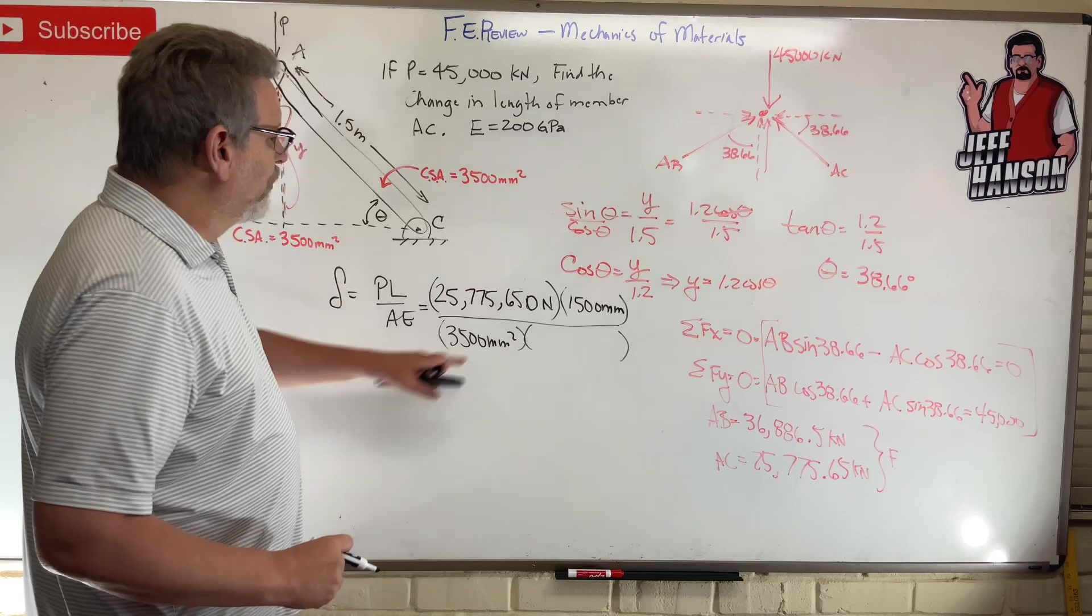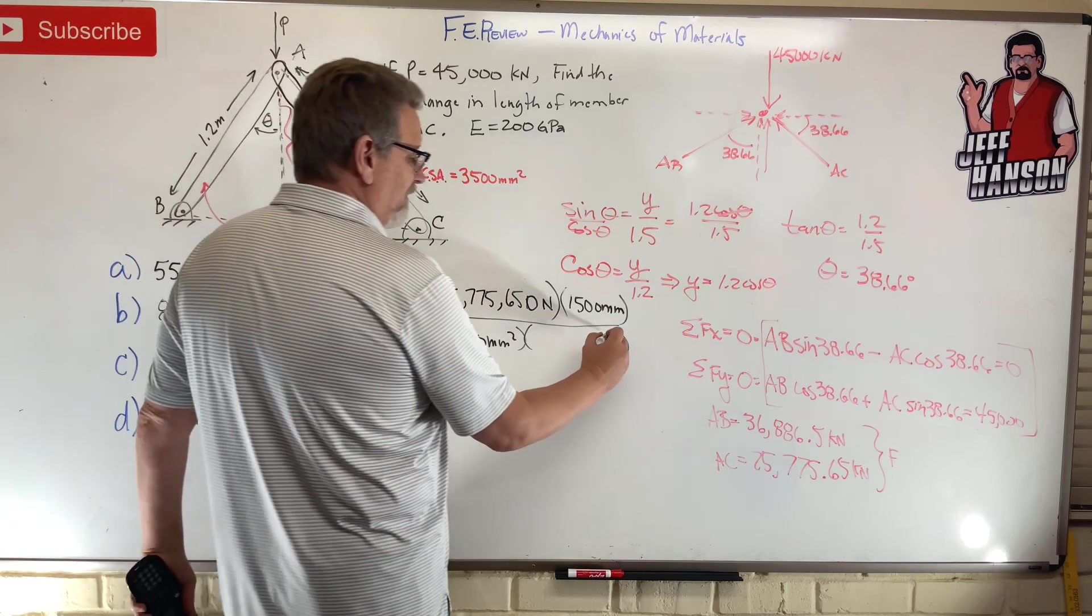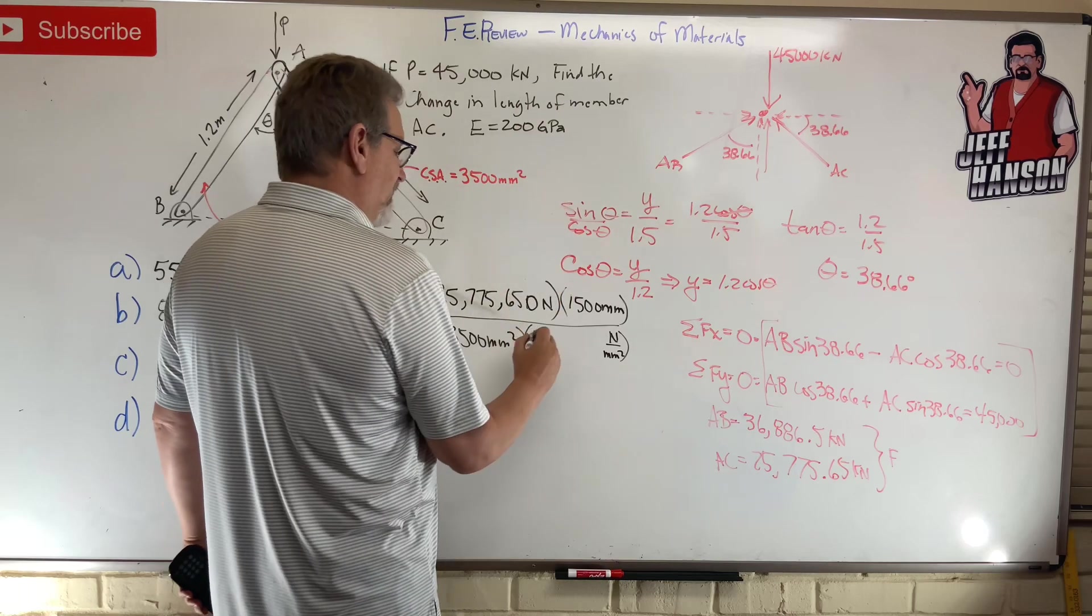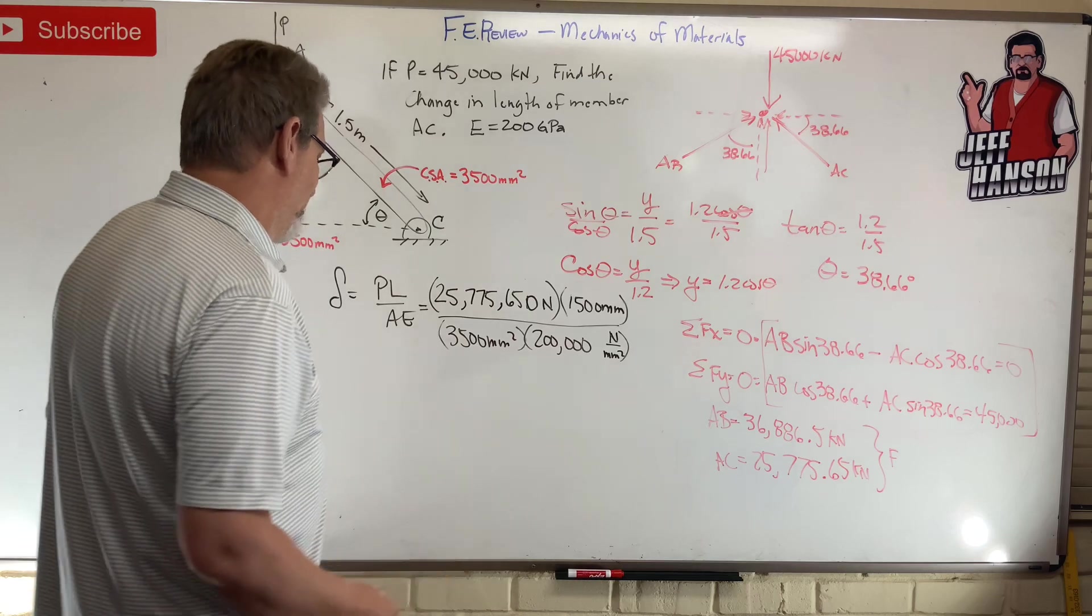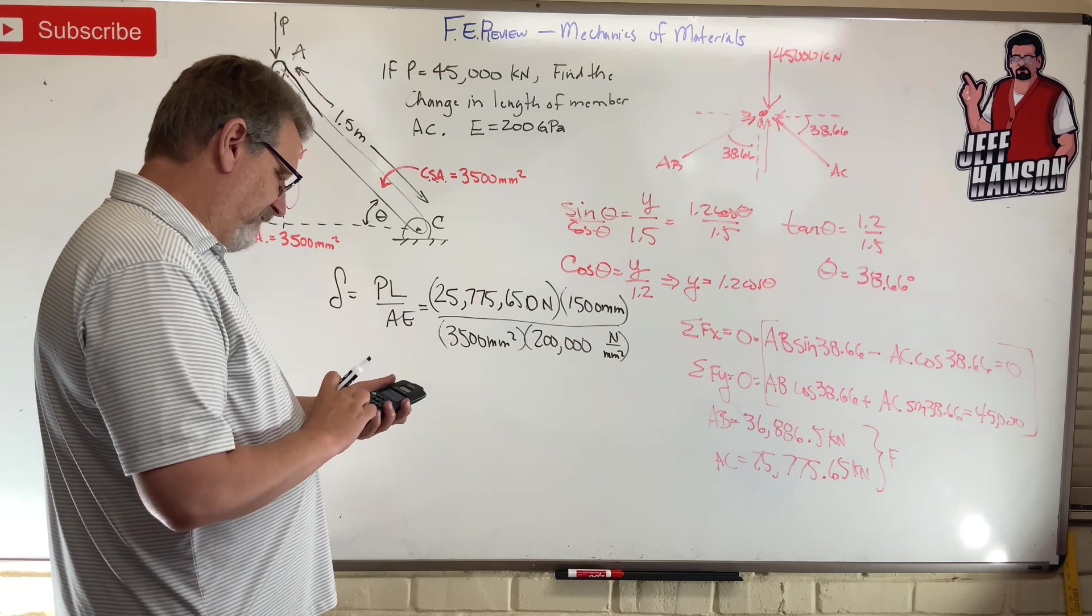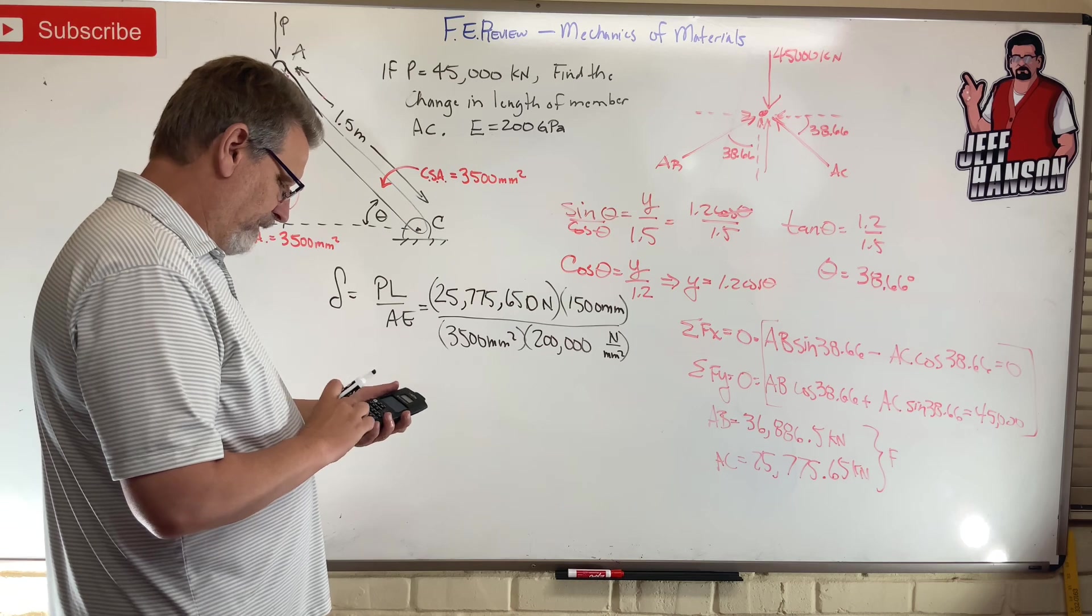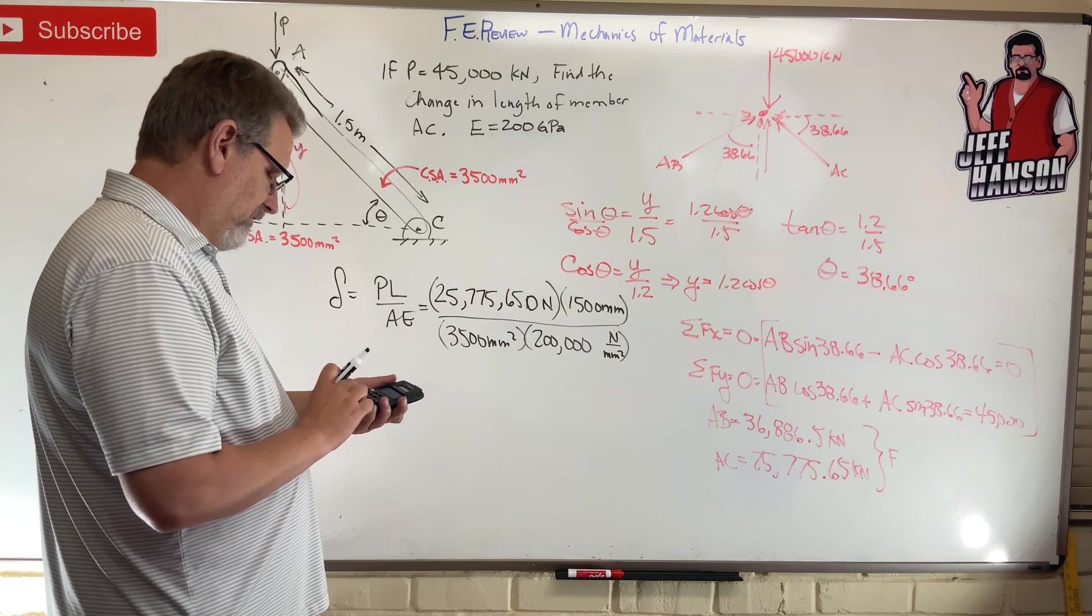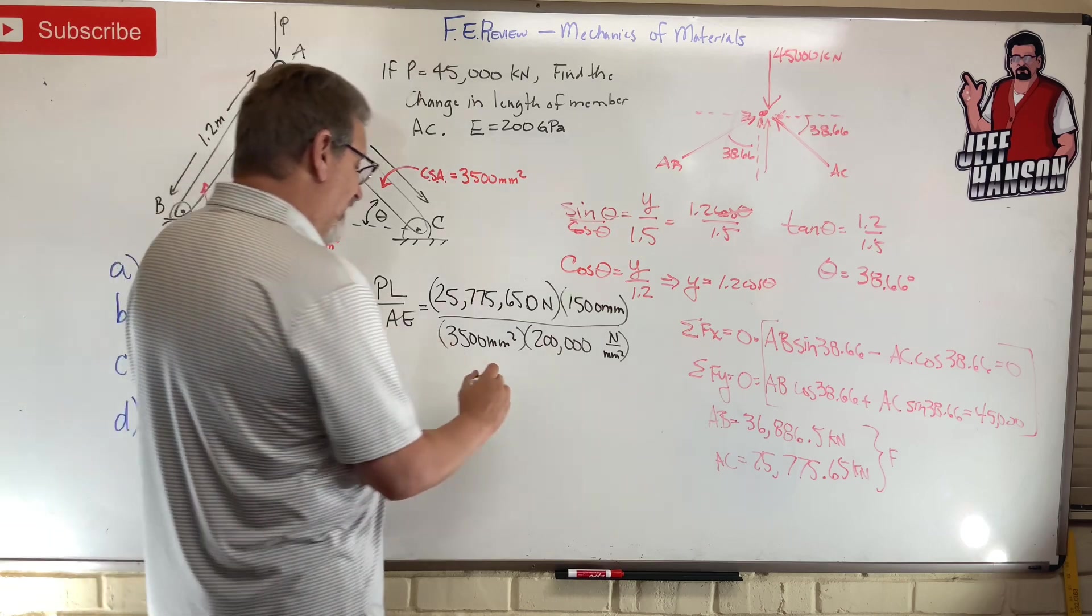Now we want E to be in newtons and in millimeters. Oh, that's gigas. We need it in megas, because mega is what? Newton over millimeter squared. So just put three more zeros on it. 200, one, two, three. Dude, we are there. Clear. 25,775,650 times 1500 equals, divided by 3500 equals, divided by 200,000 equals 55.23 millimeters.